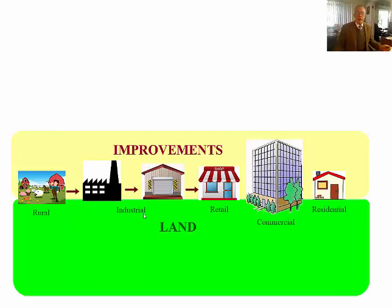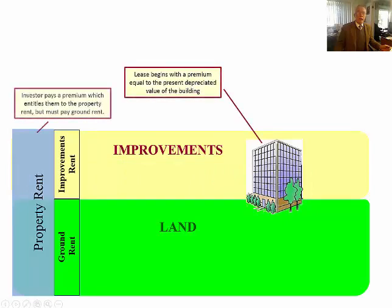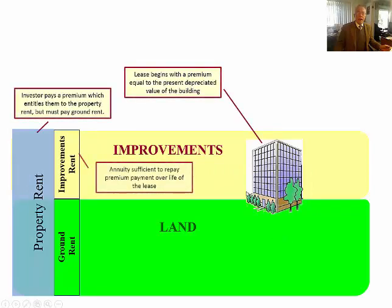It doesn't matter which type of improvement you take. Most people will be looking at commercial, industrial, or perhaps retailing. You can also use residential. The first thing we've got to look at is the way that the improvement gives the property its highest and best use. On that, we're able to earn a property rent. The property rent on most improved properties is what someone is going to pay to occupy the space. But a major share — in some cases the lion's share — is actually a ground rent hidden in the property rent.